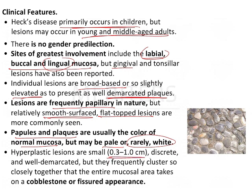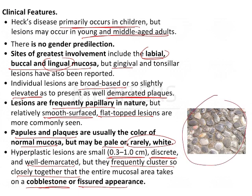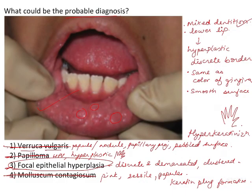The hyperplastic lesions are 0.1 to 1 cm in diameter, discrete and well-demarcated, individually visible, and frequently cluster so closely that they resemble a cobblestone appearance. As seen in the schematic image, there are discrete flat areas clustering together — similarly, these lesions look like a cobblestone or fissured appearance. These are the hallmark findings of focal epithelial hyperplasia.